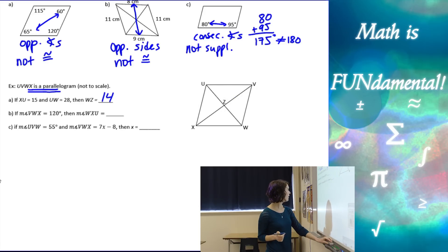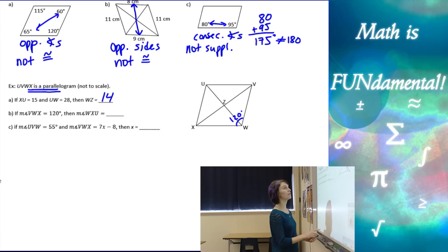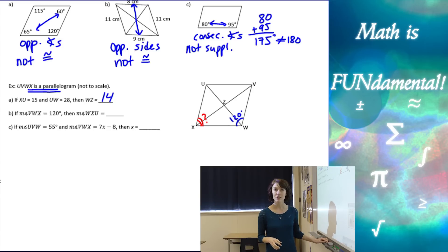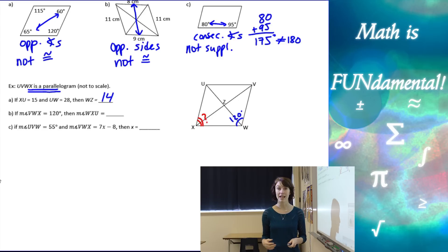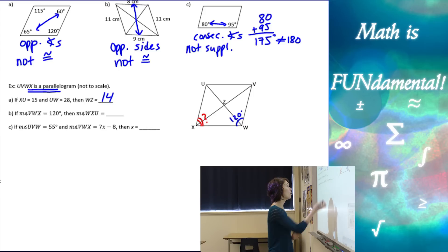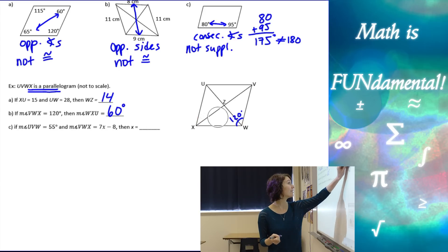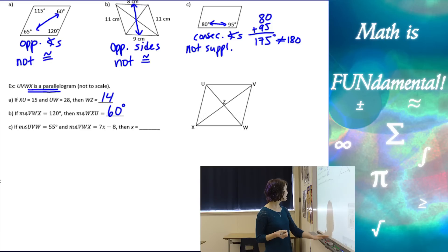Part b: if the measure of angle VWX is 120 degrees, we need to find the measure of angle WXU. Drawing on the diagram helps us see that these two angles are consecutive angles. From our properties, consecutive angles must be supplementary, which means angle WXU has to be 60 degrees in order for them to add up to 180.